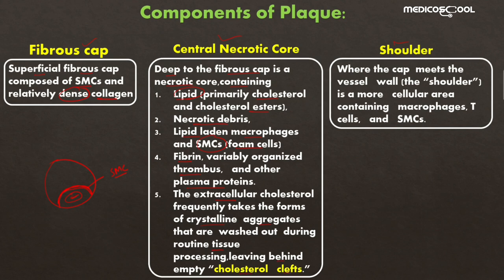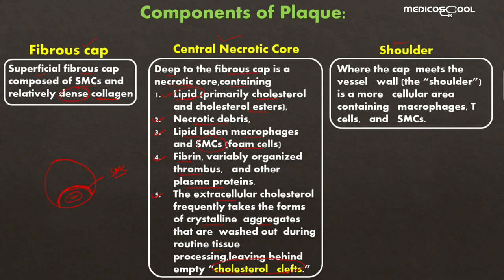In summary, the components of the central necrotic core are: lipids mainly as cholesterol and cholesterol esters, necrotic debris of different cell types, macrophages and smooth muscle cells as foam cells, fibrin and other plasma proteins, and cholesterol clefts. Cholesterol clefts are spaces left behind when cholesterol crystals are washed away during routine tissue processing for microscopy.